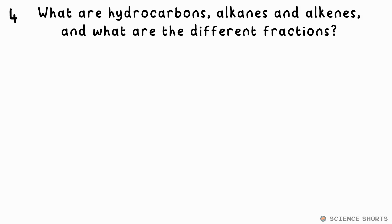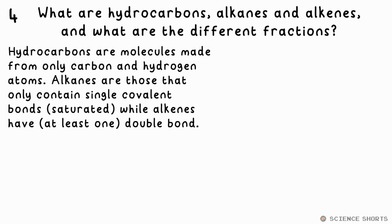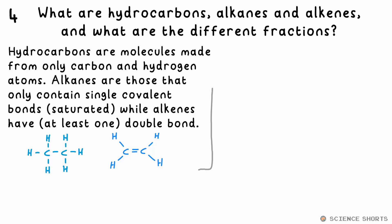Question 4. What are hydrocarbons, alkanes, and alkenes, and what are the different fractions made from fractional distillation of crude oil? Hydrocarbons are organic molecules that only contain carbon and hydrogen atoms. Alkanes are hydrocarbons that only have single covalent bonds between carbon atoms. Alkenes have a double covalent bond between carbon atoms — alkene has a double E, so that's a double bond.